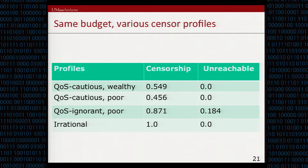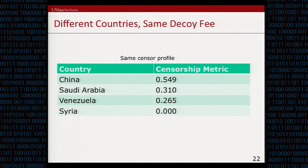Similar to the first game, we do the analysis for different sensor profiles. This shows the analysis for China taking different censorship profiles. As in the previous game, for an irrational sensor there is nothing to stop them because they don't care about quality of service — they can implement 100% censorship on decoy routing systems. However, for other profiles like the QoS-cautious wealthy sensor, there is a limit to how much they can do to stop decoy routing systems.